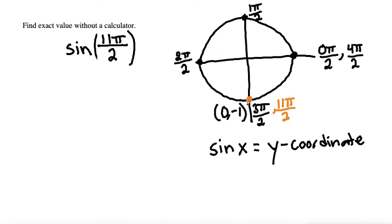You can look on your unit circle if you need to remember how to find the coordinates, but when we're on the y-axis, the x is 0, and we're down at the very bottom, so that's a y of negative 1.